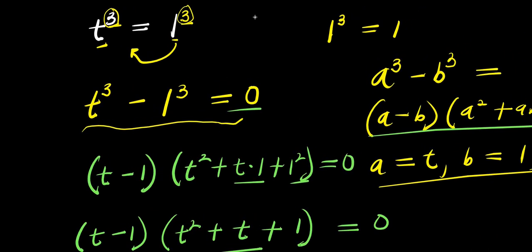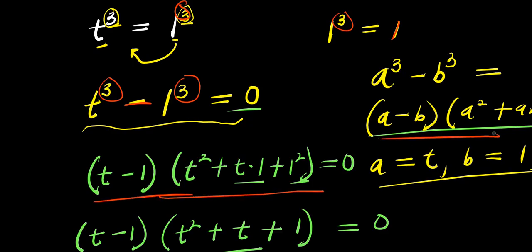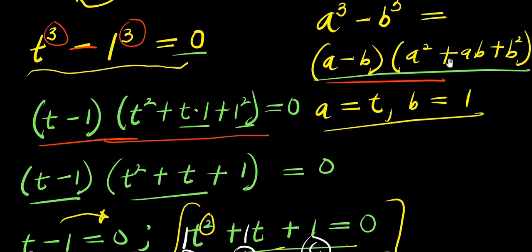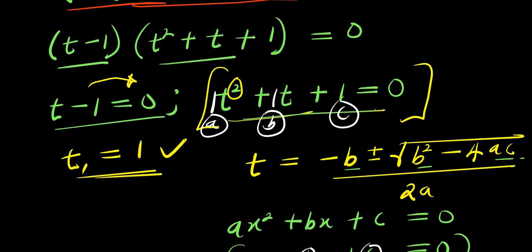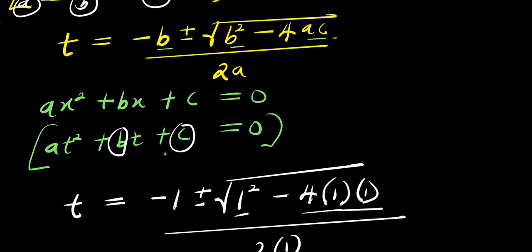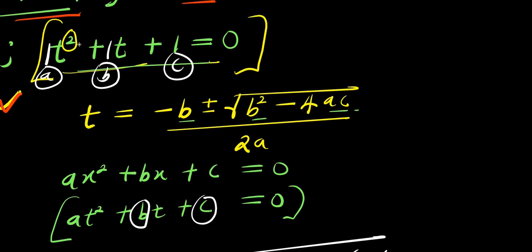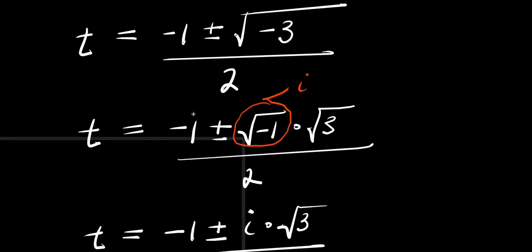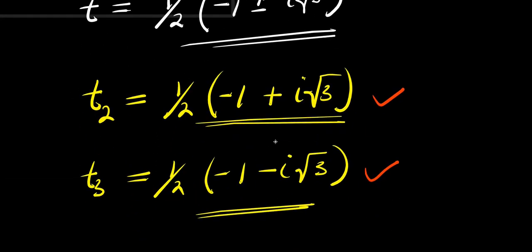To glance through this: what you need to know is that you need to raise this 1 to the power of 3, because 1 to the power of 3 is the same thing as 1. From there, we bring it over here — the exponents are now the same. You can expand using the difference of cubes identity, insert the values for a and b, and formulate two different equations. Equating each factor to 0 gives a linear equation yielding the real value t equals 1, and a quadratic equation yielding the two complex values. So this is how you solve it, and we arrive at these particular values. Thank you and goodbye.